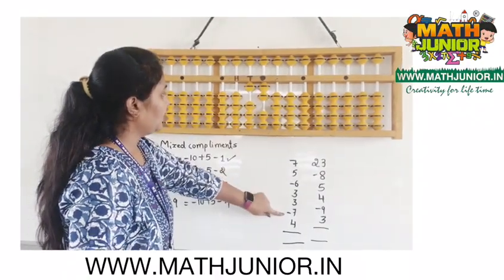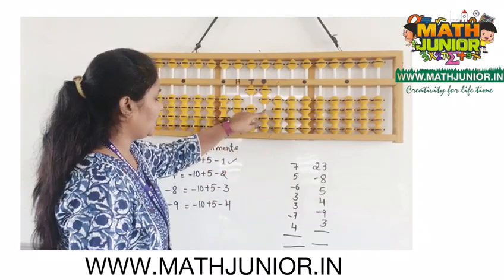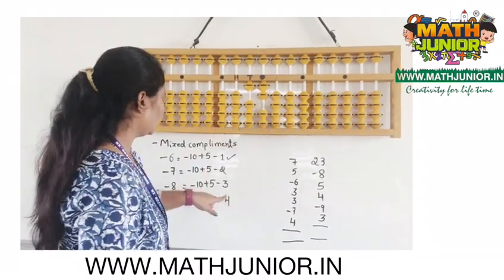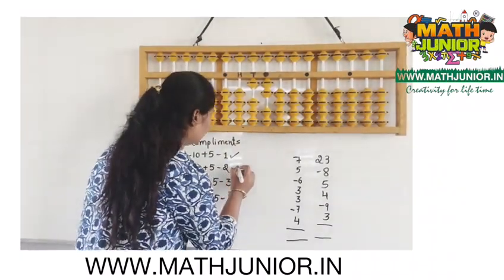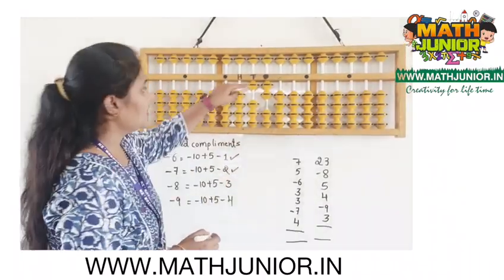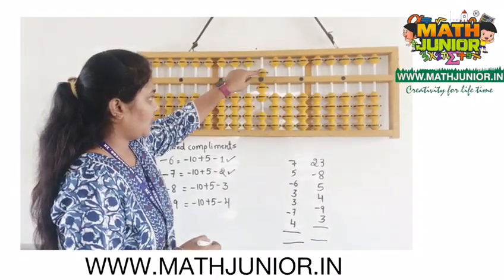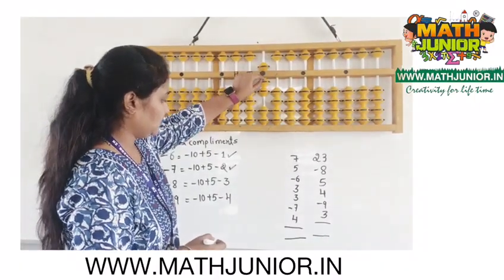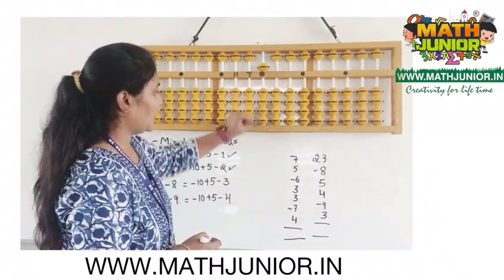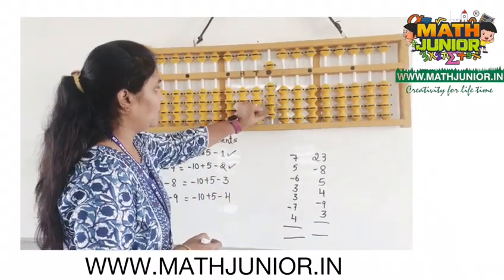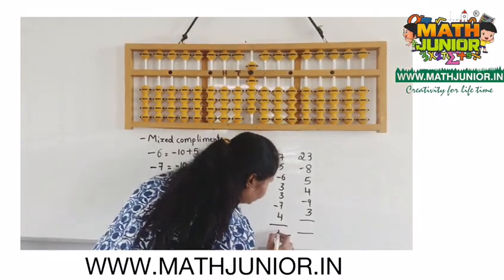Then add 3 is add 10 and minus 7. Then minus 7 — we cannot remove 7 directly, so we use the formula: minus 7 equals minus 10 plus 5 and minus 4. Then add 4 — we can add 4 directly. So the answer is 9.